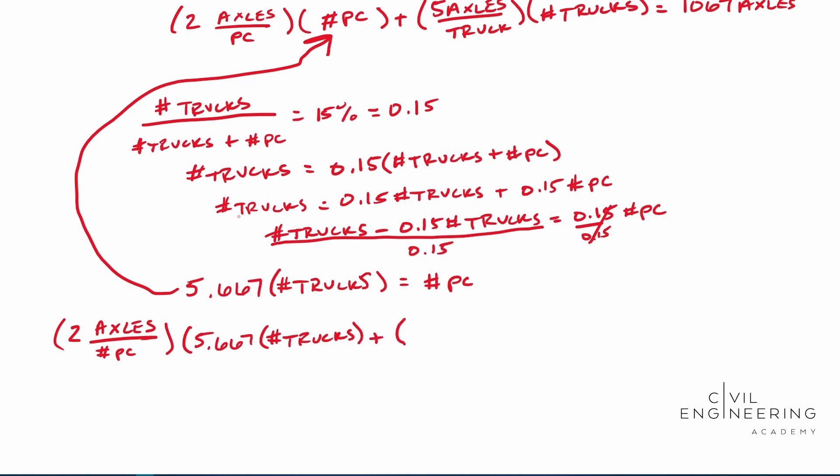All right. And then we need to add the 5 axles, 5 axles per truck. And we need to multiply that by the number of trucks. This is number of trucks. All right. And we know that this actually ends up being 1067 axles.